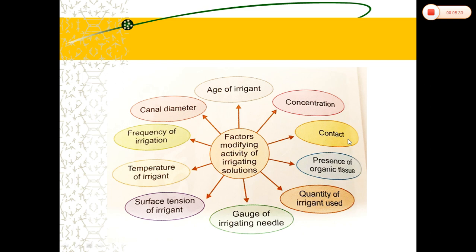If you don't prepare the canal well — at least to a size 40 — the irrigant cannot go deeper into the canal and cannot reach the apical third. The third factor is the presence of organic tissue. Organic tissue decreases the effectiveness of all intracanal medicaments. If you don't remove organic tissue before placing a medicament, it decreases the medicament's efficacy. The protein content of organic tissue forms a coagulate when it reacts with the medicament, which serves as a barrier preventing further penetration.